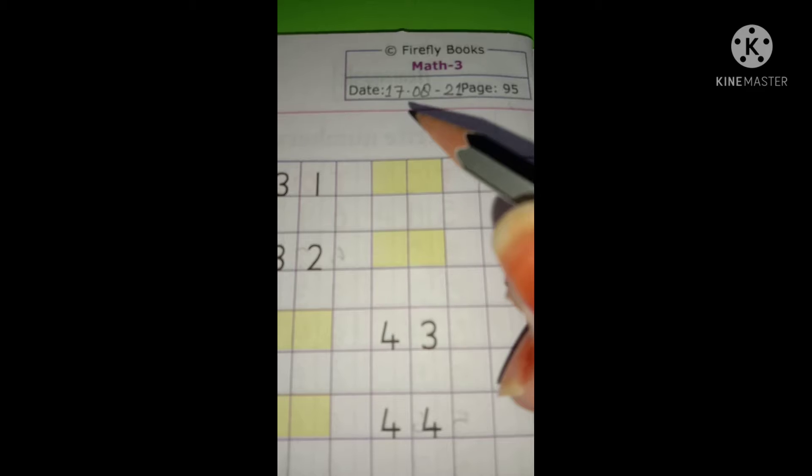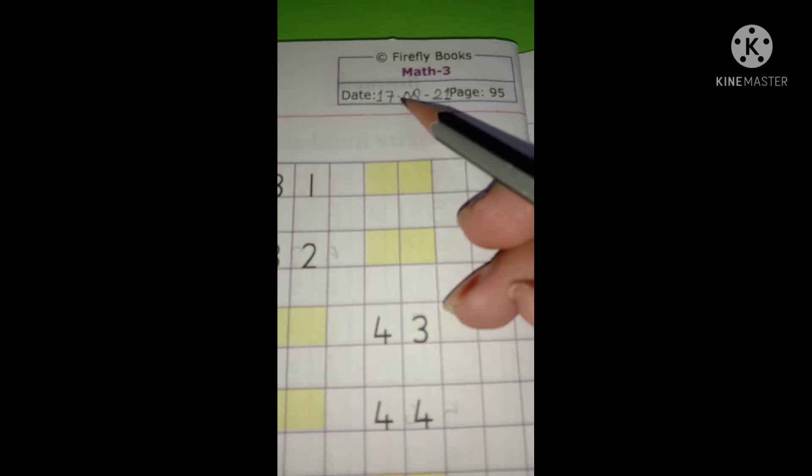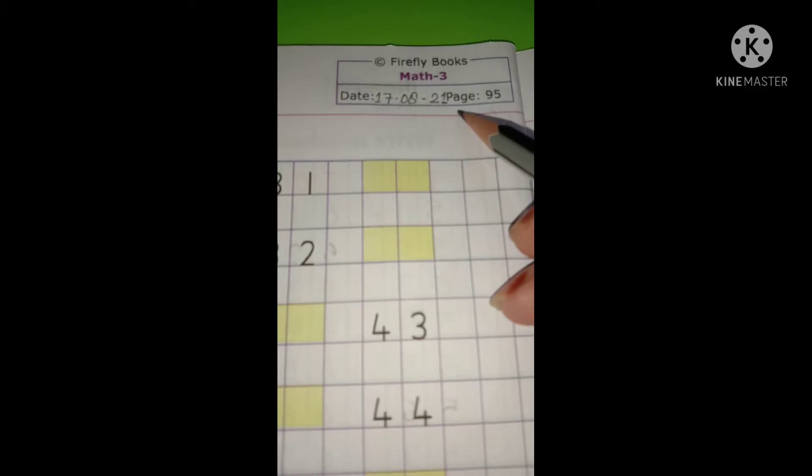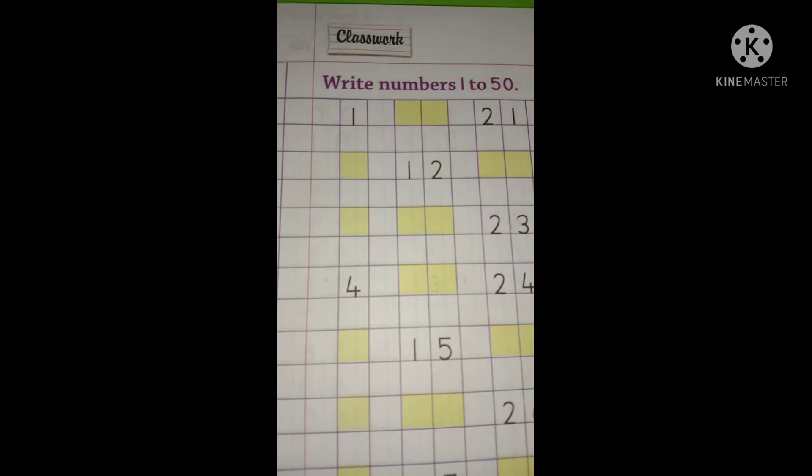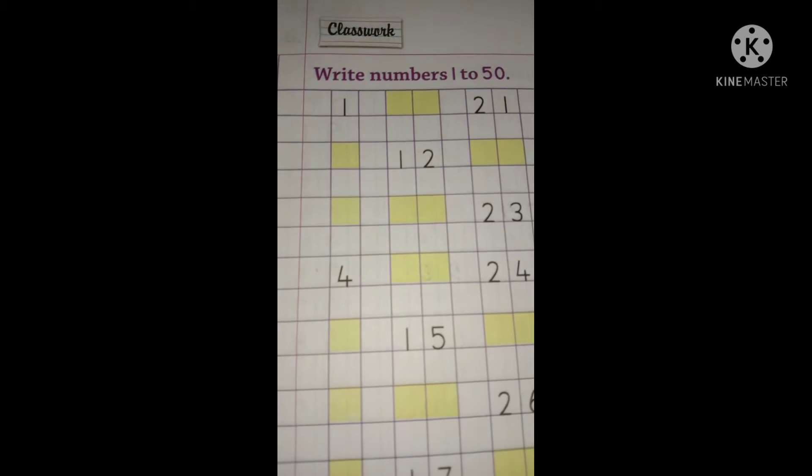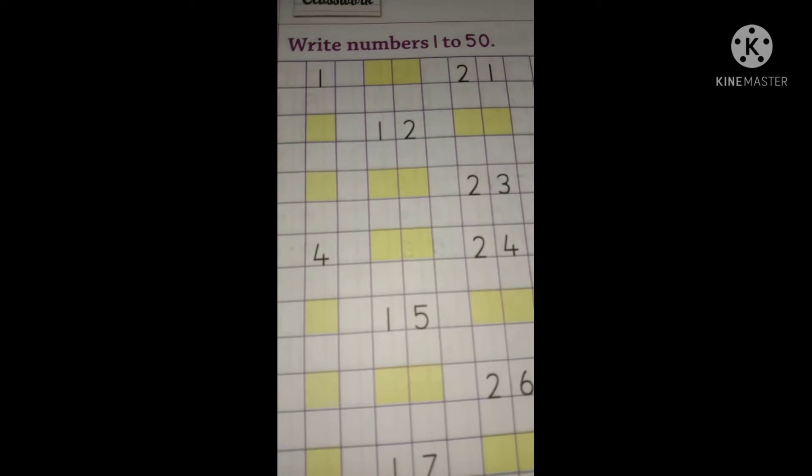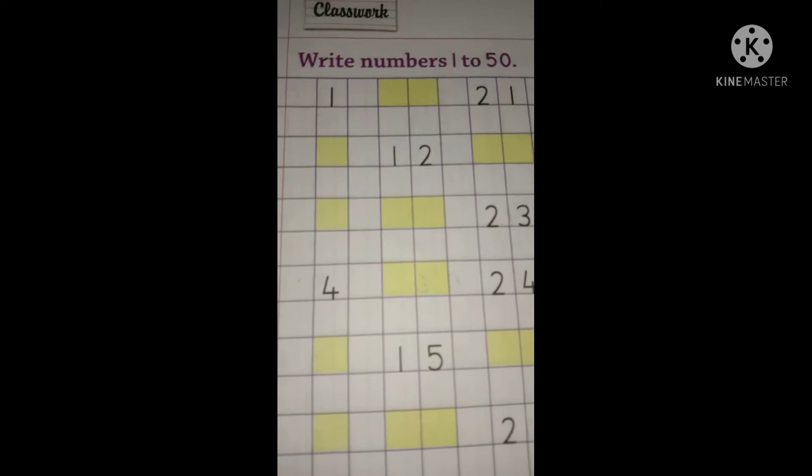Write down 17, then put a small dash, then month and then year. So students, today we will revise numbers from number 1 to 50. We have already learned numbers 1 to 50, today we will revise.